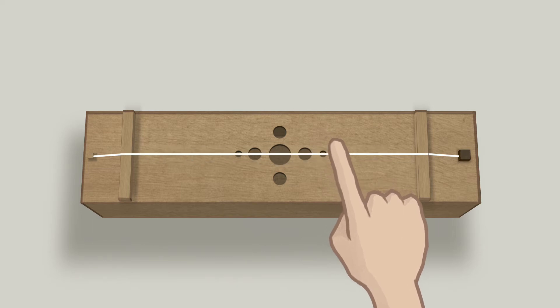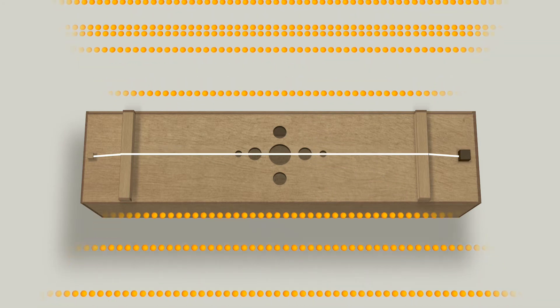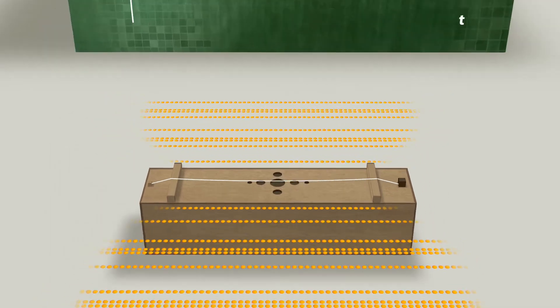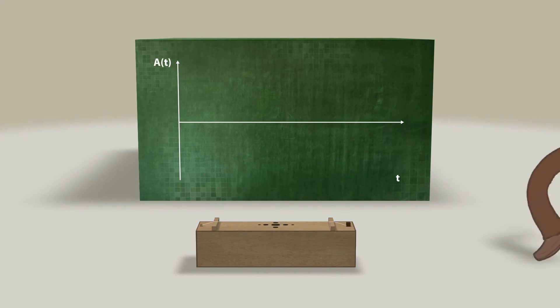Plucking causes the string to vibrate. We cannot, however, hear the oscillation directly. The vibrating string must be surrounded by air so that the air molecules can carry the vibration to our ears at the speed of sound in the form of fluctuations in pressure and density.